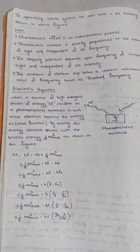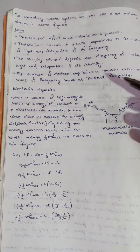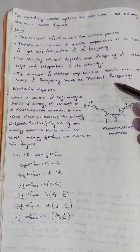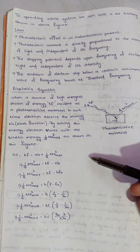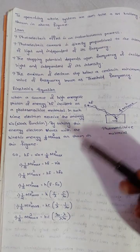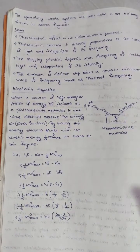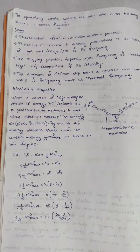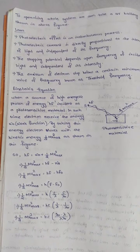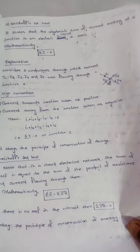For the exam: definition is 1 mark, the laws are 2–3 marks, and the Einstein equation is 2 marks — total 5 marks for a long question. Practice the definition and Einstein equation.